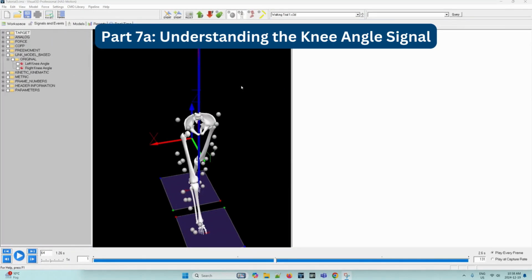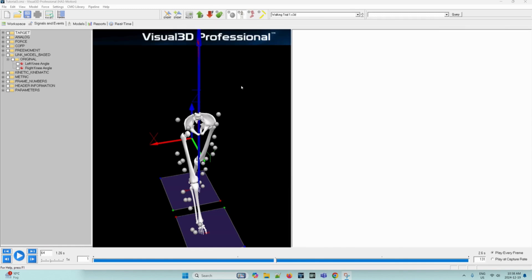Next, we can use the application to understand this knee angle signal that we have created. To do this, we can graph the X component of the right knee angle and left knee angle signals. So first, right click the left knee angle signal within the link model based folder. And select Graph X and New Graph. So we can navigate to the left knee angle signal here. Right click it. Select Graph X. And then New Graph.